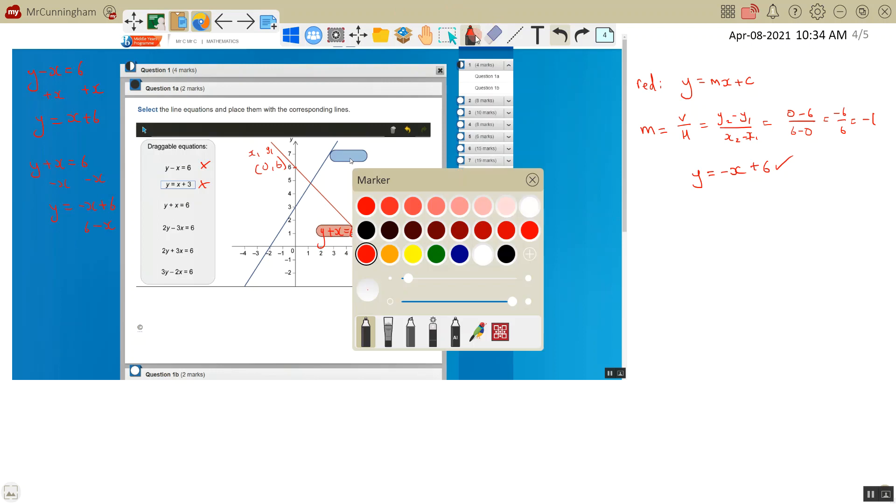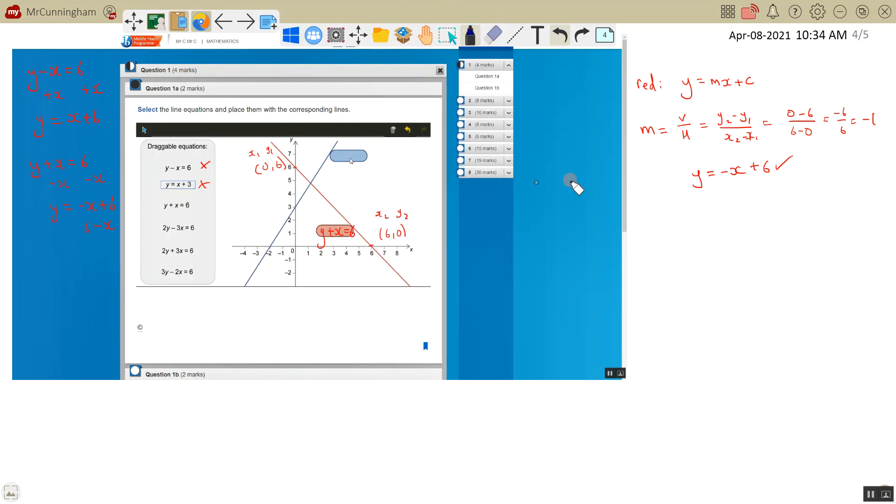Now let's look at the blue line. I'm going to do it the same way: y equals mx plus c. First we'll work out the gradient. Pick two points: this one is the easiest at (0, 3) and this one at (-2, 0). I'm going to do vertical over horizontal. So 3 minus 0 over 0 minus -2.